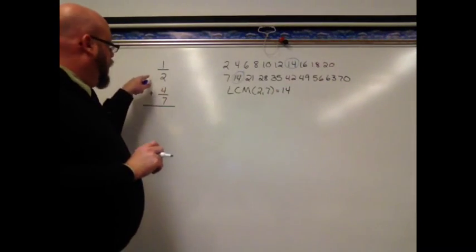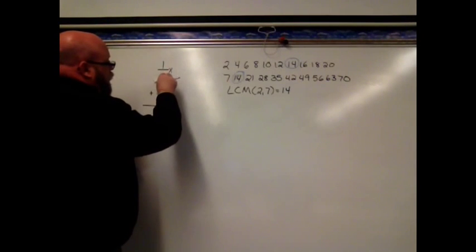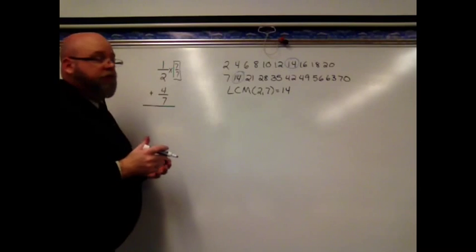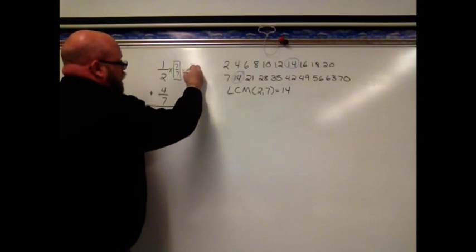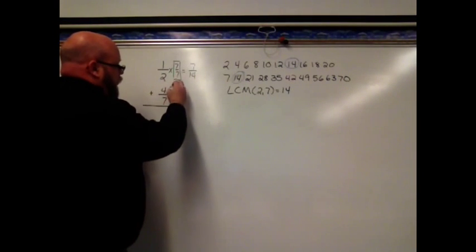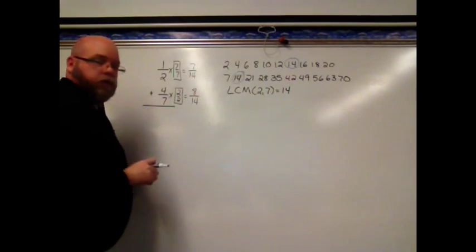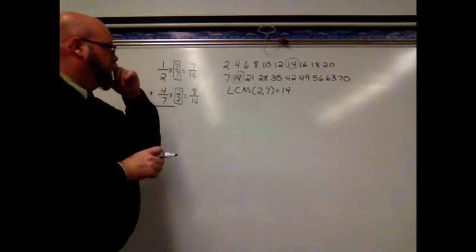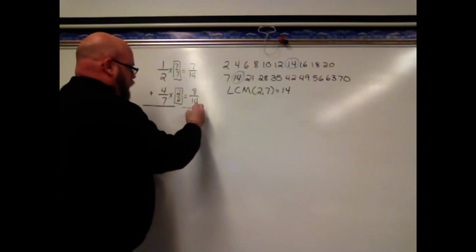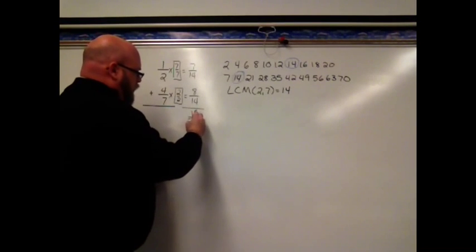So 14 is going to become the new denominator for both of these fractions that I'm going to add. So I'm thinking about this. Well, I'm going to multiply 1 half times 7 sevenths because 2 times 7 gives me 14. So I get 7 14ths when I rename 1 half. I'm going to multiply 4 sevenths by 2 over 2. So I'm going to get 8 14ths when I rename 4 sevenths. Then I'm going to go ahead and add. 7 plus 8 is 15 and my denominator stays the same. So I have 15 14ths.